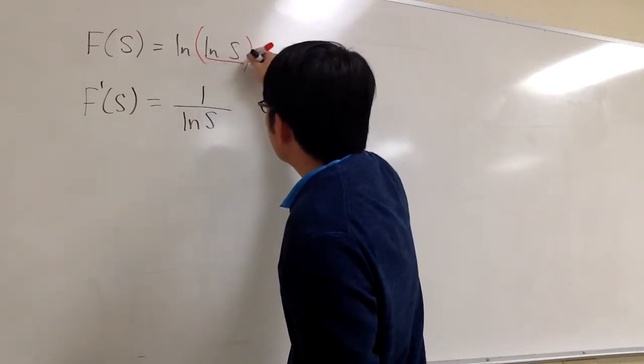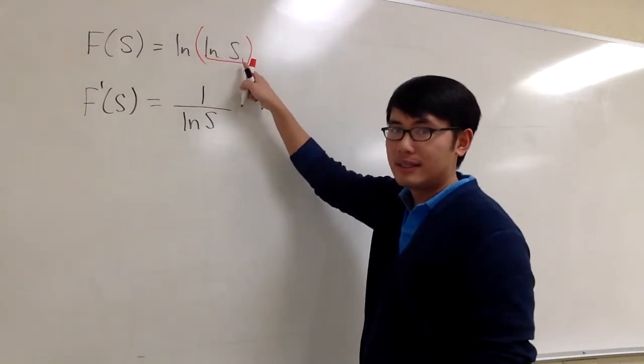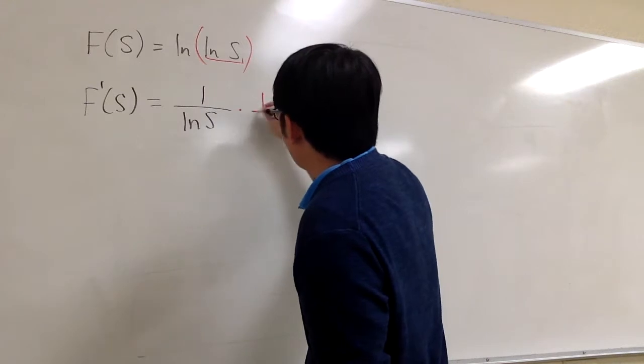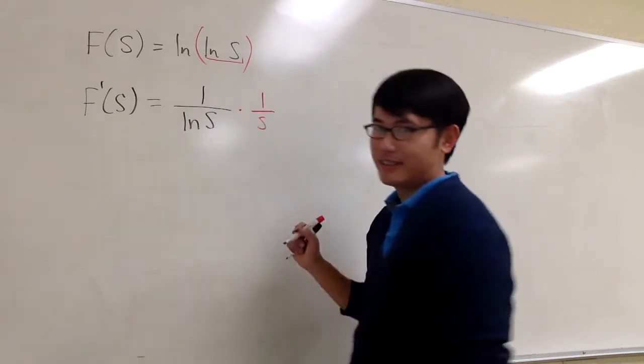But then now we have to look at the inside, which is ln s. We have to multiply by the derivative of that, which is going to be 1 over s, like this.